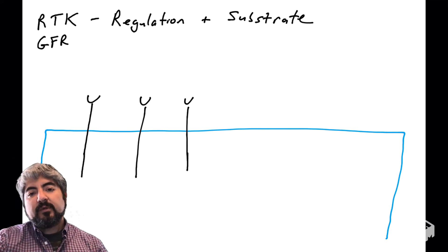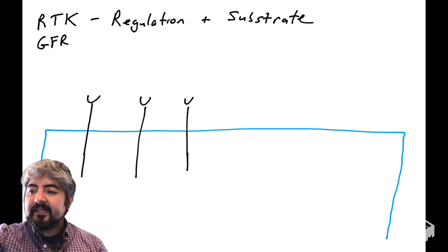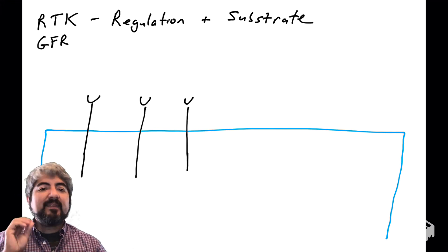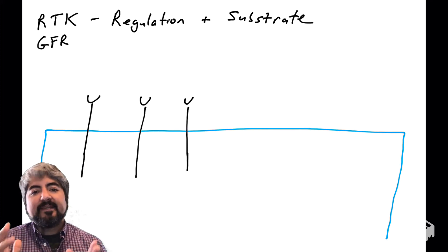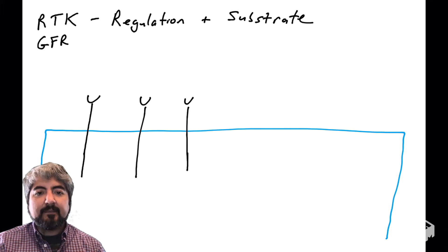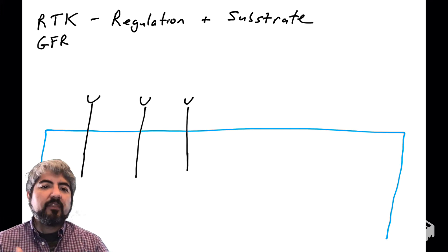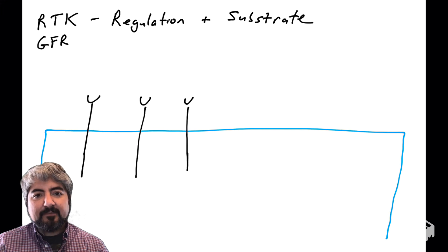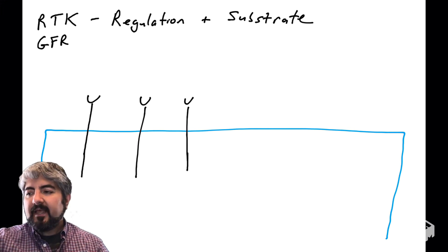In this video we're going to talk about how receptor tyrosine kinases are regulated and how they phosphorylate their substrates, which we have not introduced yet. Recall that receptor tyrosine kinases are typically also growth factor receptors. On this cell I've drawn three growth factor receptors and they're not binding growth factor.